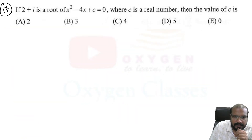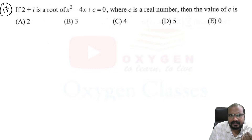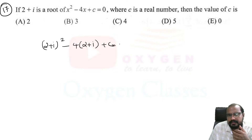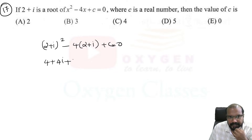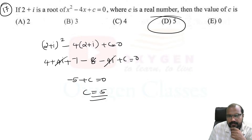Next question: 2 plus i is a root of x² minus 4x plus c where c is real. Substituting: (2 + i)² minus 4(2 + i) plus c equals 0. (2+i)² equals 4 + 4i + i² equals 3 + 4i. Then 3 + 4i minus 8 minus 4i plus c equals 0, giving minus 5 plus c equals 0, so c equals 5. Option d is correct.